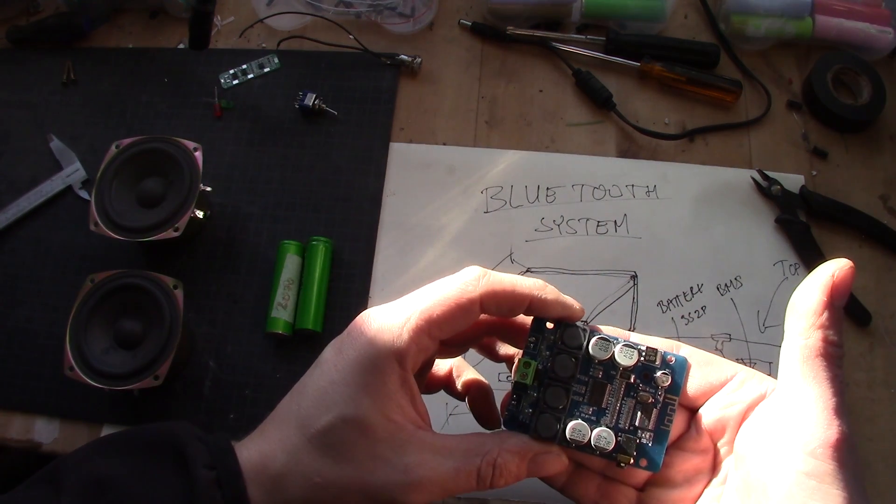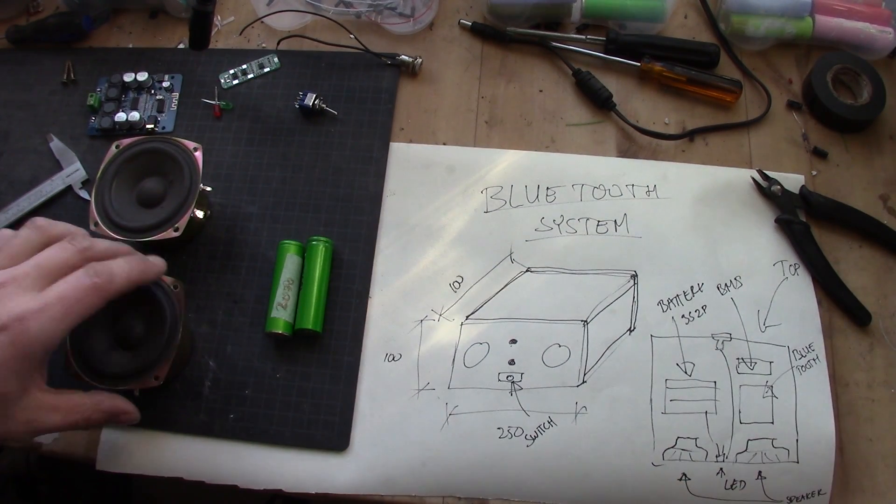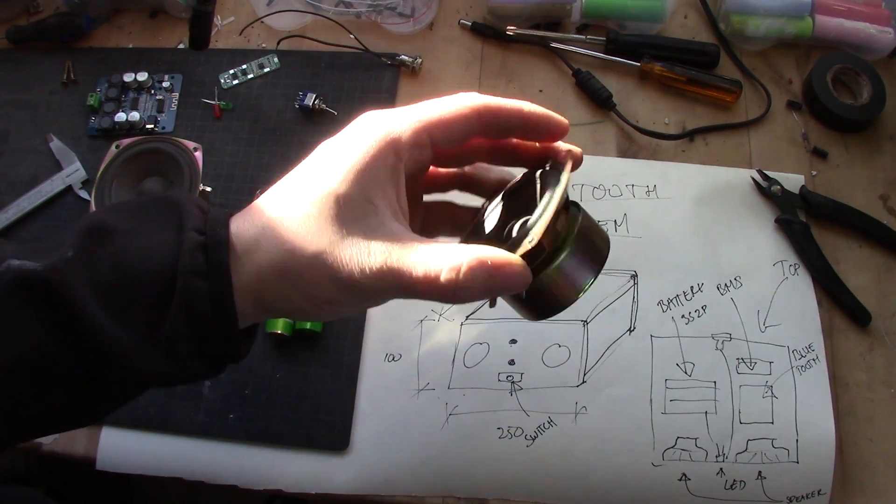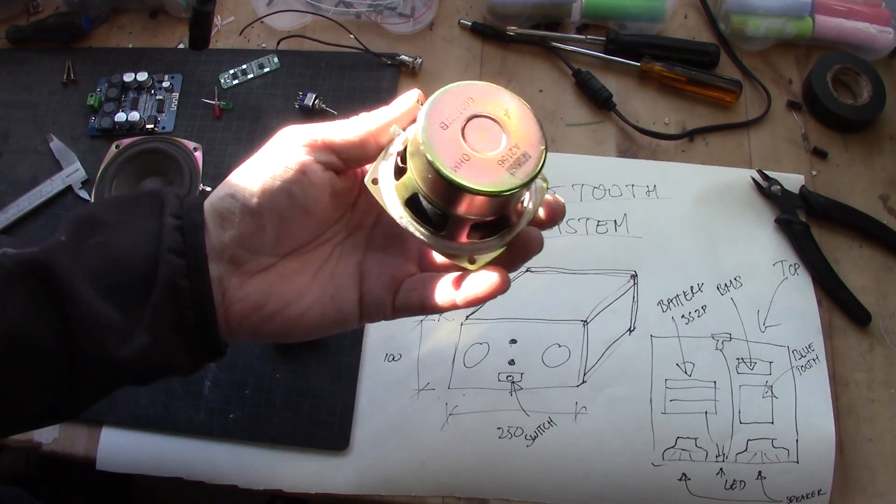This is the amplifier with the Bluetooth inside. And you have the two speakers. The two speakers in this case are normal speakers that I got out of a computer speaker that was salvaged a couple of years back.